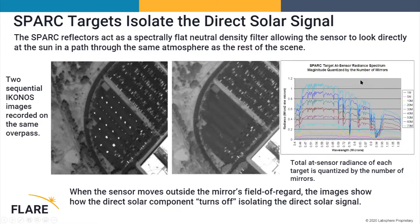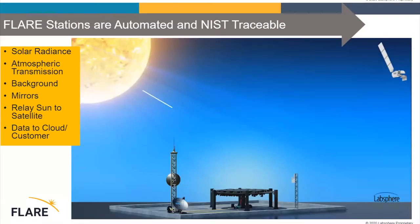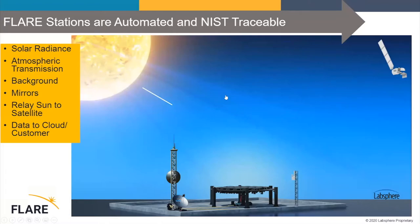On the far right we have a linear scale — a number of SPARK targets along a line. Your eye can barely discern a difference in brightness, but clearly there is a multiplier effect based on the number of mirrors. That multiplier is spectrally independent and directly correlated to the amount of radiance seen by the satellite. To summarize the Flare system's operation: we need solar radiance, atmospheric transmission, background measurement, mirror reflectance, and then we track and relay the sun to the satellite, sending all that data back through the cloud system to the customer via the Flare portal.